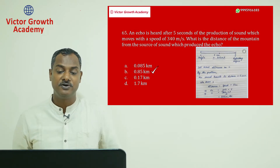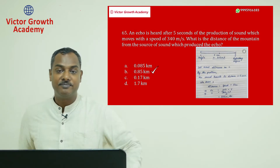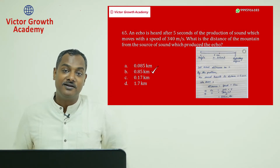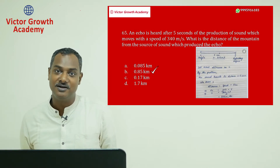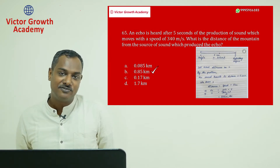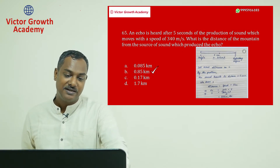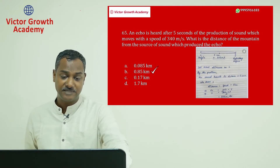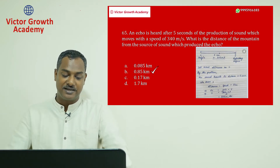They are asking how the echo is produced and how the distance to the mountain is verified. Like in the movie The Lion King, sound bounces off the mountain and reflects back as an echo. Question number 65 answer is B — using the echo equation, the answer works out to 0.85 kilometers.